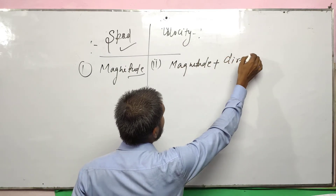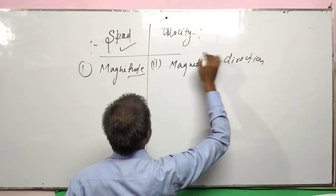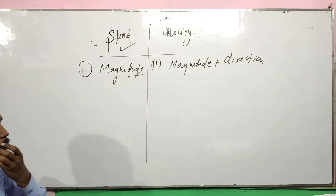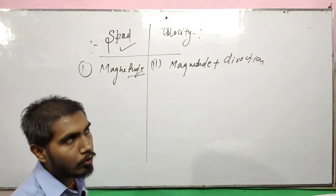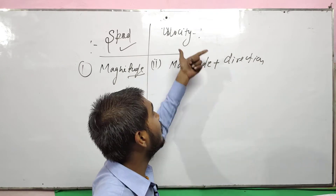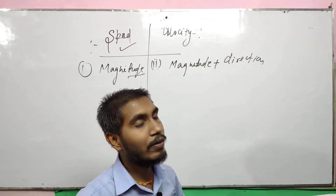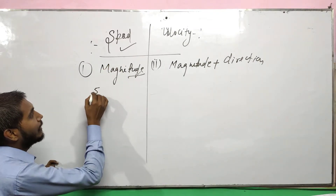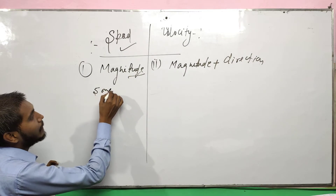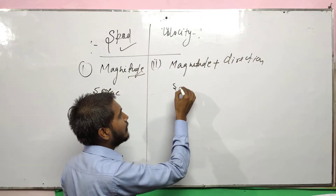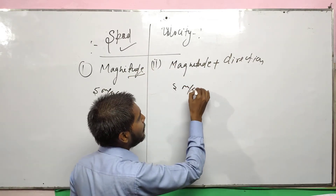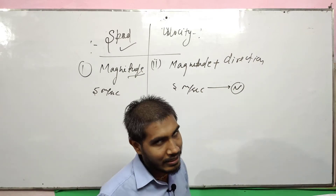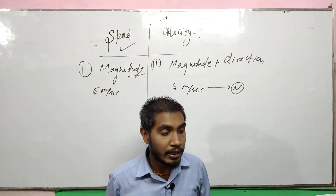Speed is a scalar quantity and velocity is a vector quantity. Speed has only magnitude, and velocity has both magnitude and direction. For example, speed is 5 meters per second, and velocity is 5 meters per second towards north. This is the first difference between both.